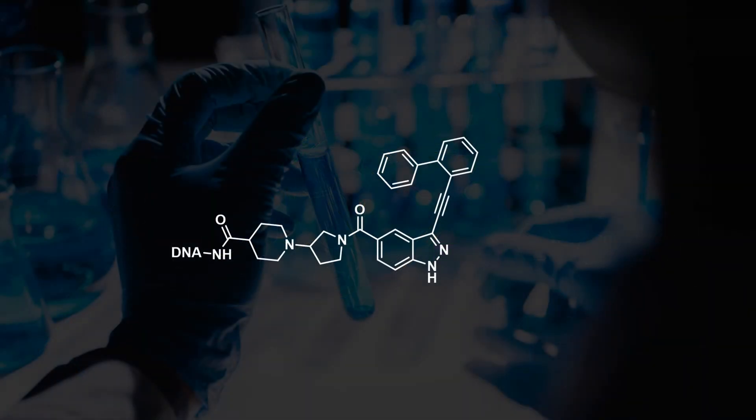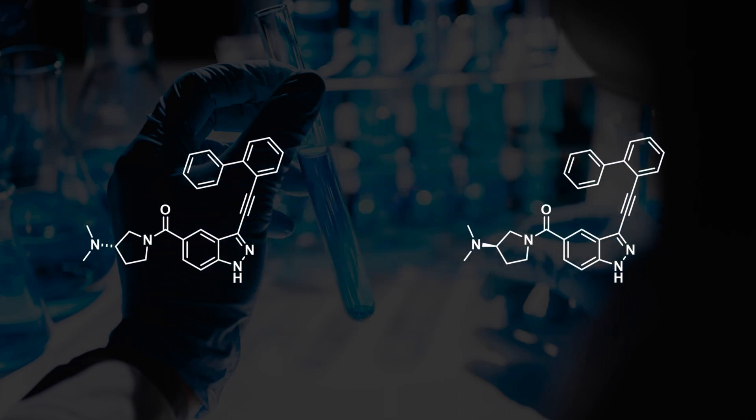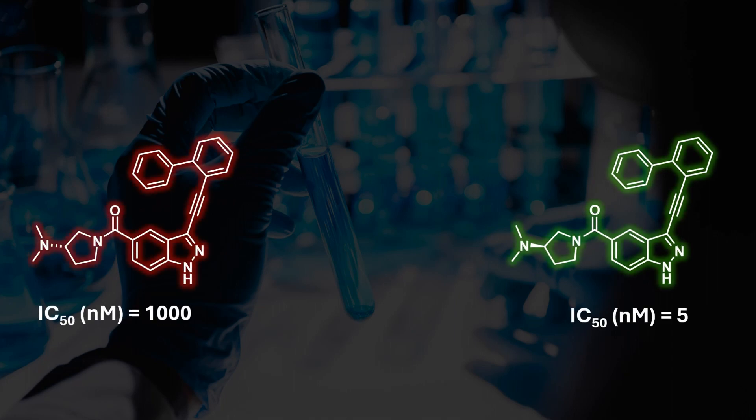The medicinal chemistry efforts first focused on trimming down the linker region of the molecule and synthesizing the individual enantiomers. These changes showed that the R enantiomer was 8 times more potent than the original hit and 200 times more potent than the S enantiomer. However, these changes did not lead to an increase in metabolic stability, which was still an issue.